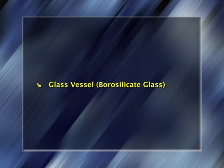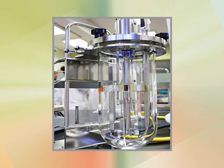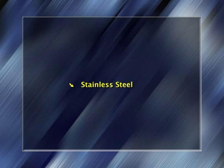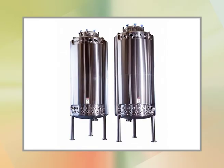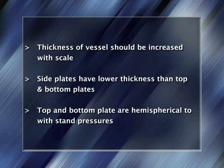For glass vessels, borosilicate glass is used. Type 1: a glass vessel with round or flat bottom with top plate — it can be sterilized by autoclaving and the largest diameter is 60 cm. Type 2: a glass vessel with flat bottom and top and bottom stainless steel plates — this type is used in in-situ sterilization processes and the largest diameter is 30 cm. For stainless steel, the thickness of the vessel should be increased with scale; side plates have lower thickness than top and bottom plates; and top and bottom plates are hemispherical to withstand pressures.